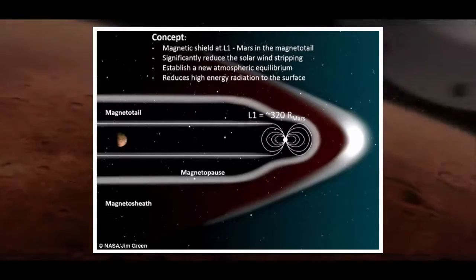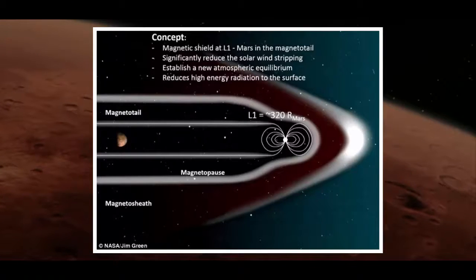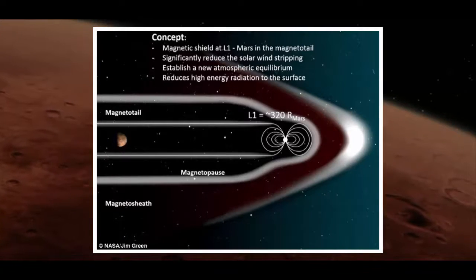According to NASA Planetary Science Division Director Jim Green, a powerful magnetic dipole positioned at Mars' L1 Lagrange point could potentially deflect the solar wind like a natural magnetic field. The L1 Lagrange point is a location of gravitational equilibrium that ensures the structure remains between Mars and the Sun.